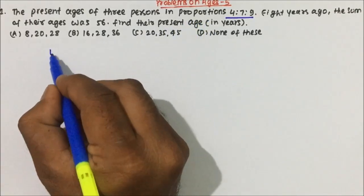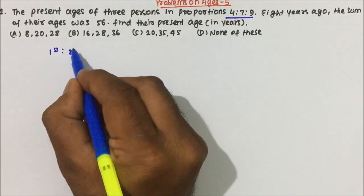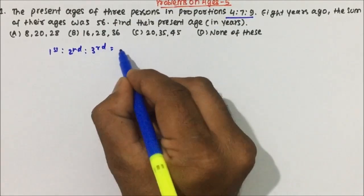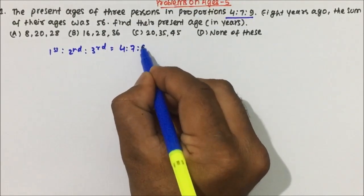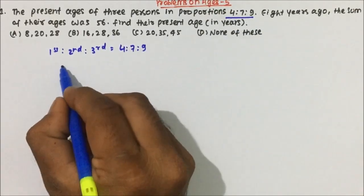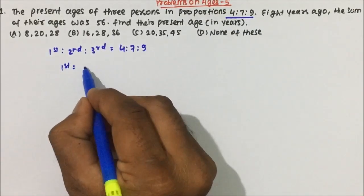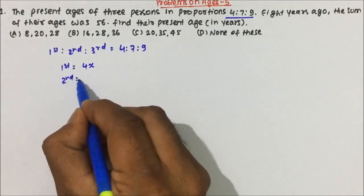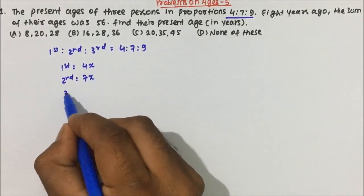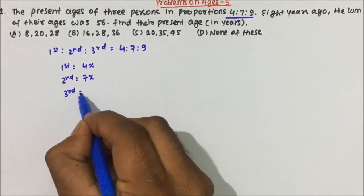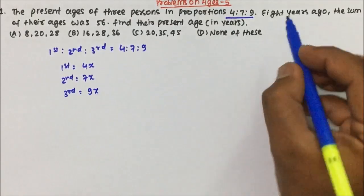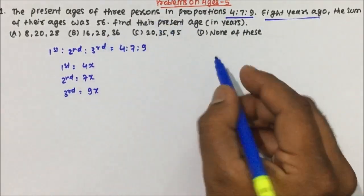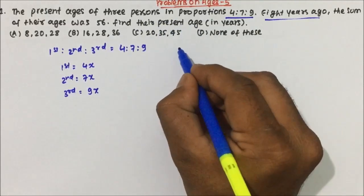Here the present age of three persons is in the proportion 4:7:9. Let's assume the first, second, and third person. The ratio is 4:7:9, so in terms of value, the first person's age will be 4x, the second person's age will be 7x, and the third person's age will be 9x.